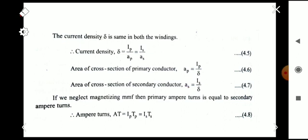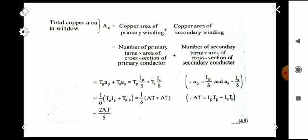If we neglect the magnetizing ampere-turns, we know that the primary and secondary ampere-turns are the same. That is, the ampere-turns AT = I_p × T_p = I_s × T_s. The ampere-turns on the primary and secondary sides are equal.